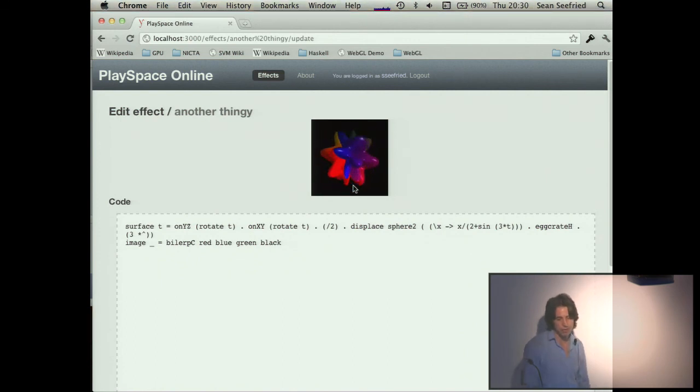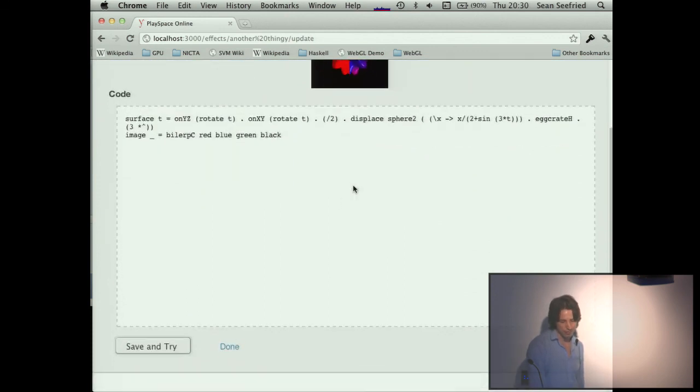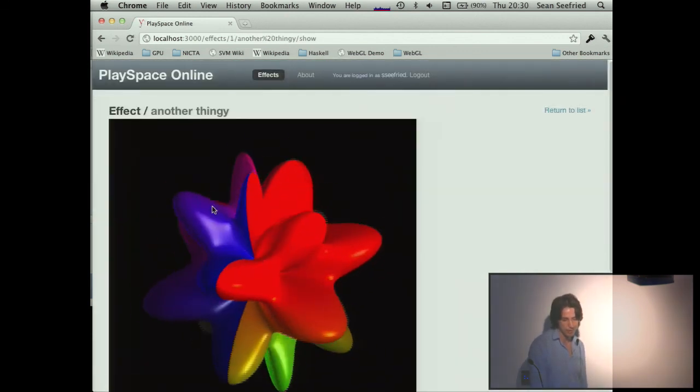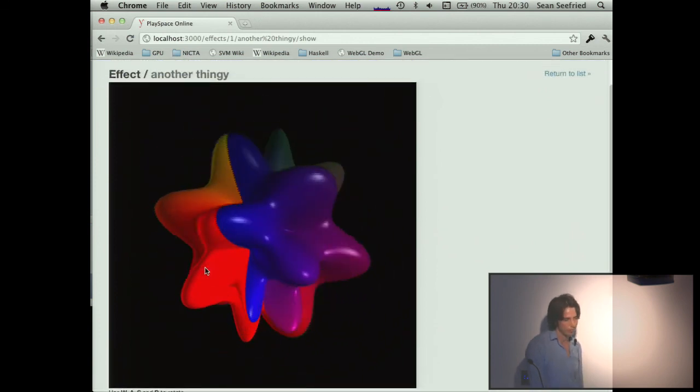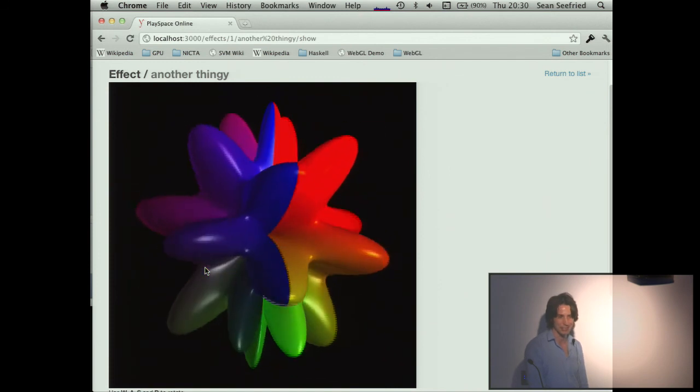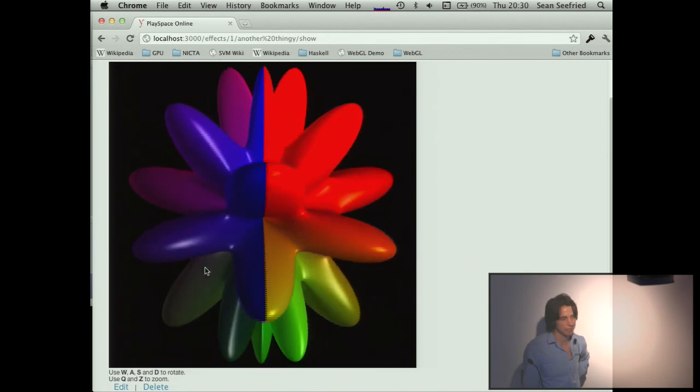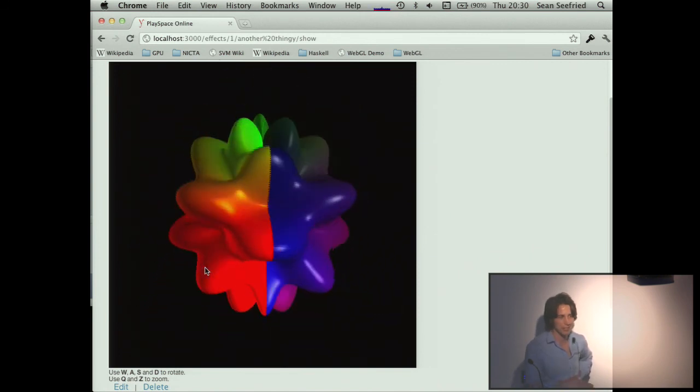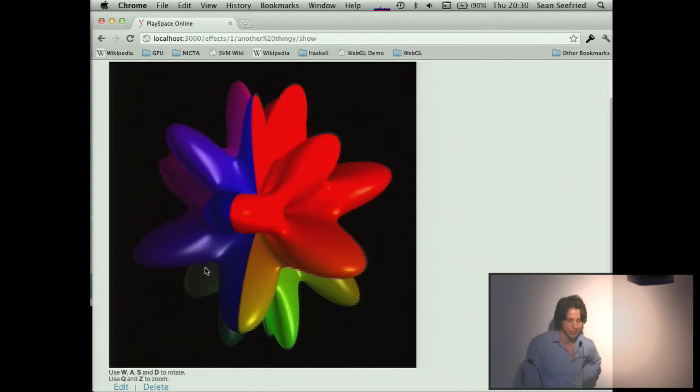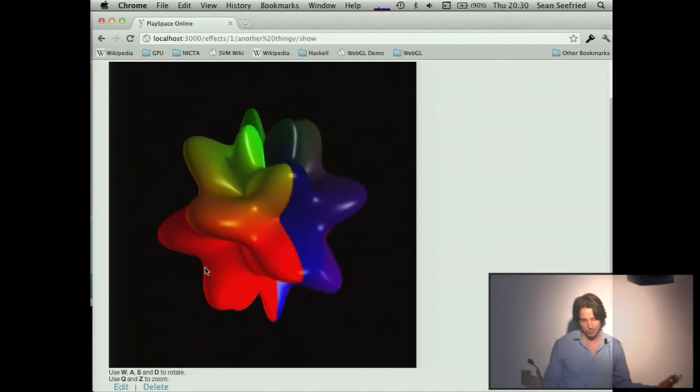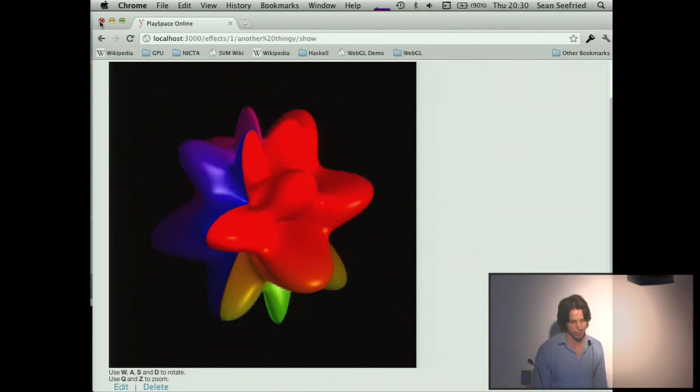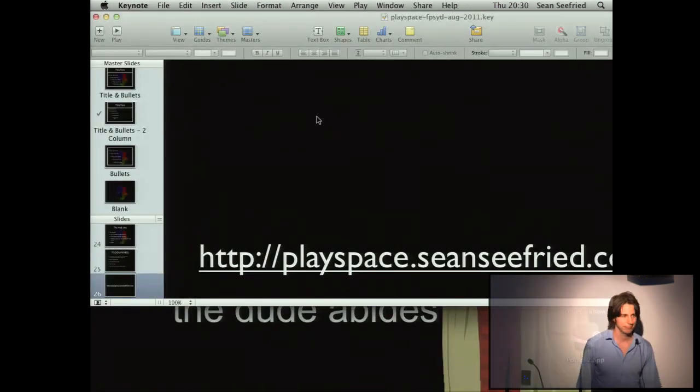You'll see it's kind of pulsating based on time. The image which we map to it is simply a bilinear interpolation between red, blue, green, and black. I can get in here and change various things. Maybe I want to make it a bit more spiky. It'd be nicer if there was a slider, but as you can see, it's fast. The compiler's fast and the effects are fast because they're running on your GPU and GLSL. GPUs naturally lend themselves to being the targets of functional languages.